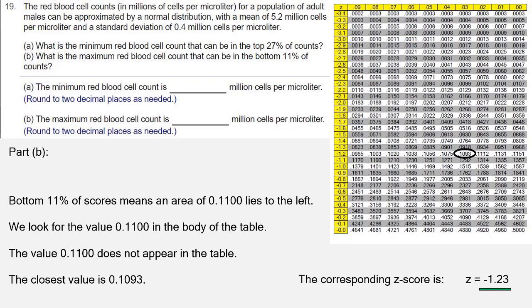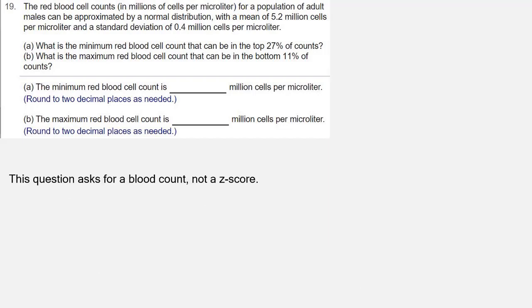But again, we're not looking for a z-score. We're looking for a count of red blood cells. So we need to use the x-value formula.